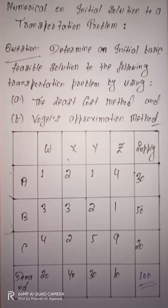Since the total supply is 100 and total demand is also 100, this is a balanced transportation problem. So now we will find out its initial basic feasible solution. For this, we will first use the Least Cost Method.